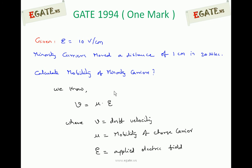We know the relation: drift velocity V is equal to mu times electric field E, where V is drift velocity, mu is mobility of charge carriers, and E is the applied electric field. From this relation we can calculate mobility.